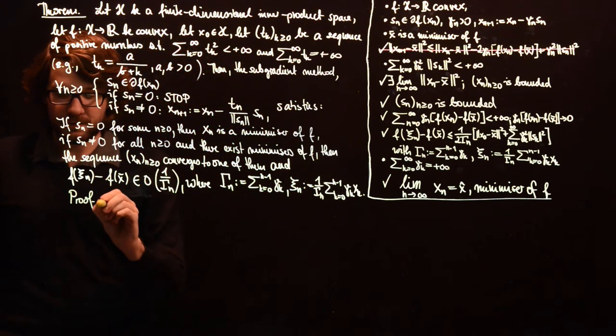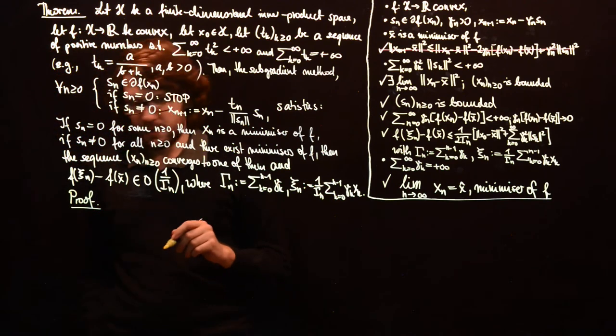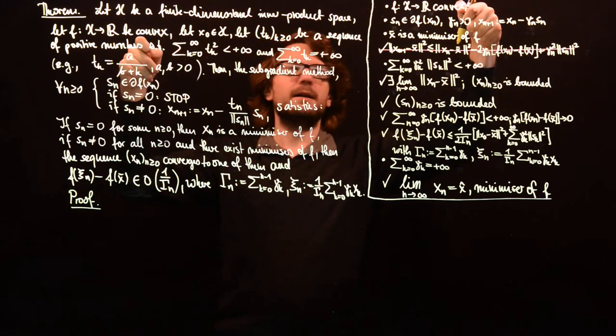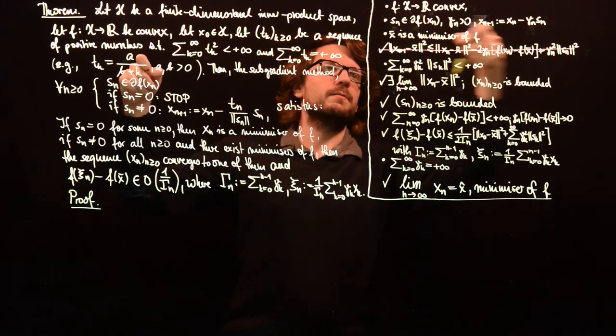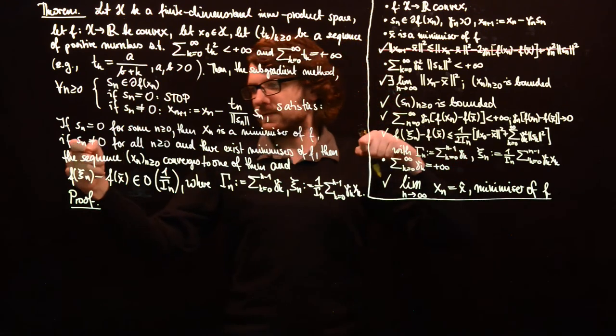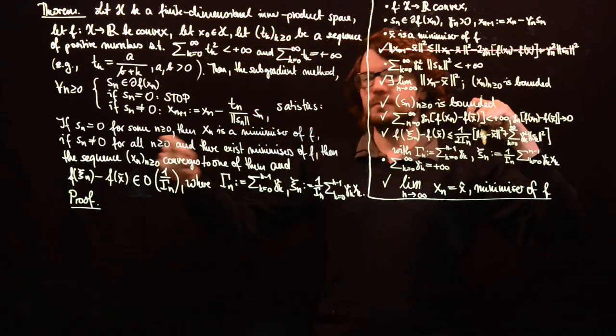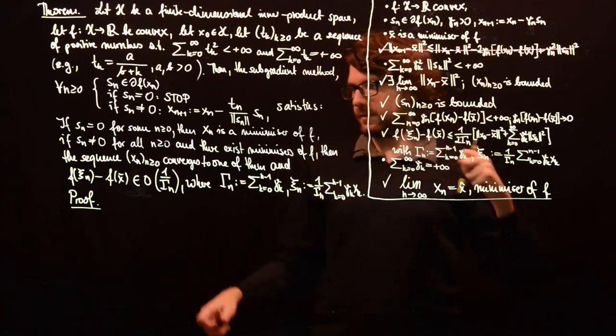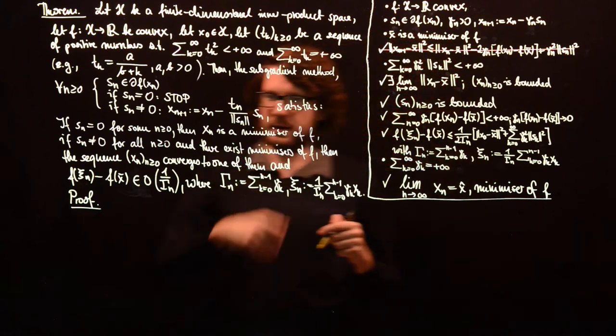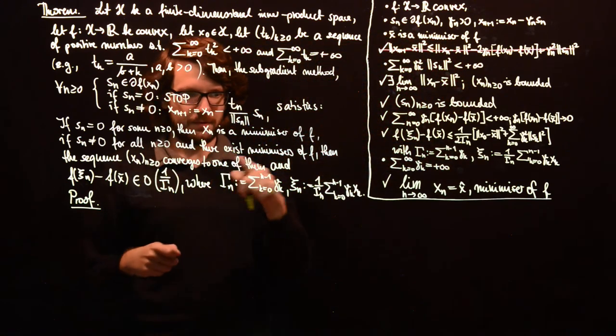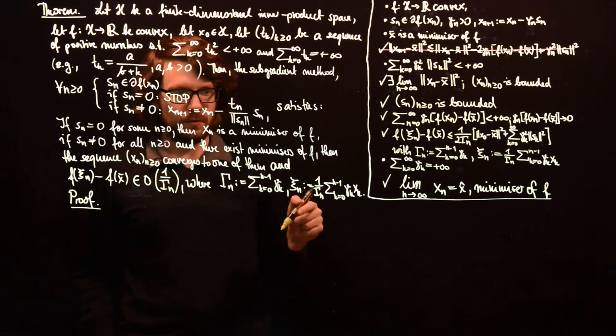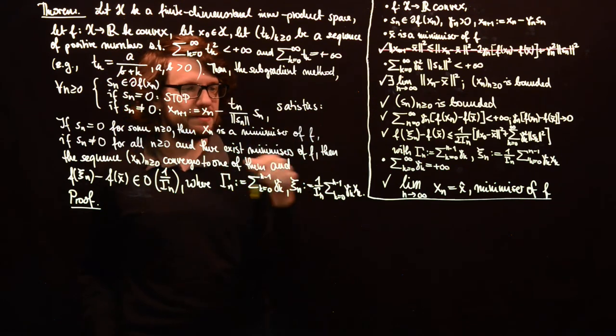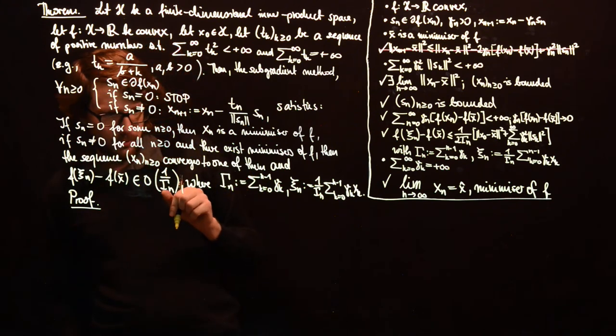Let's just give a proof for the statements we have not really shown. So obviously this is directly in our assumptions and subgradient algorithms. It's also in our assumptions, at least for the second case, that we don't stop anywhere. So we have an infinite sequence. x_bar is a minimizer of f. This is just assumed for the existence of minimizers is relevant here.